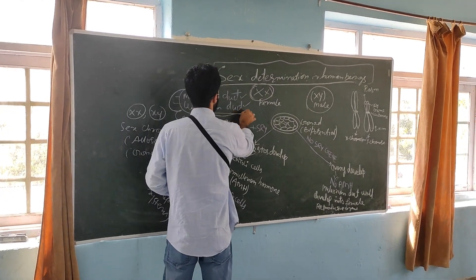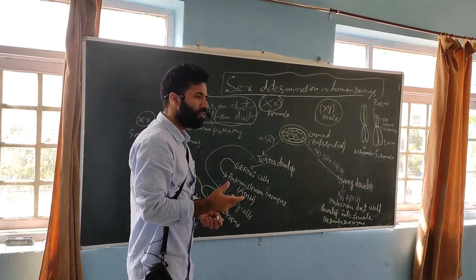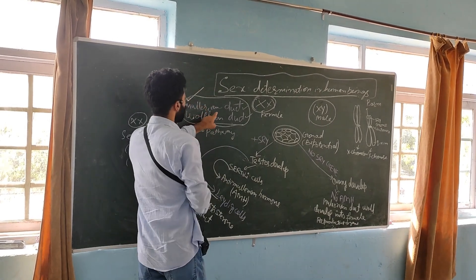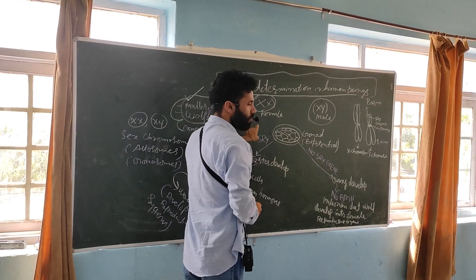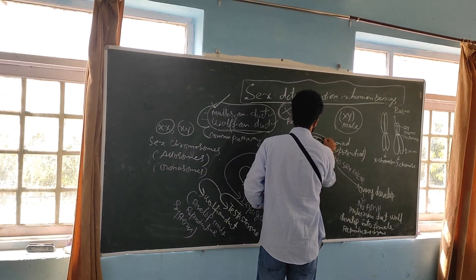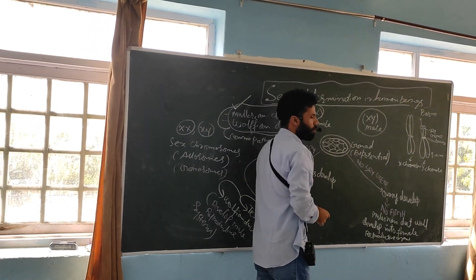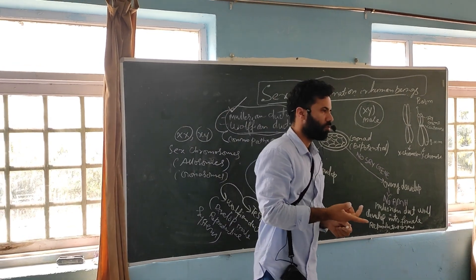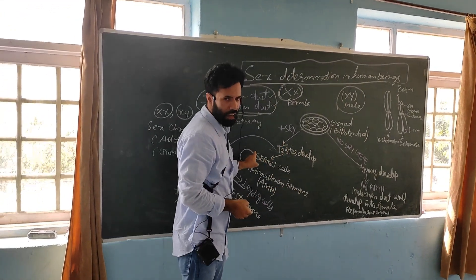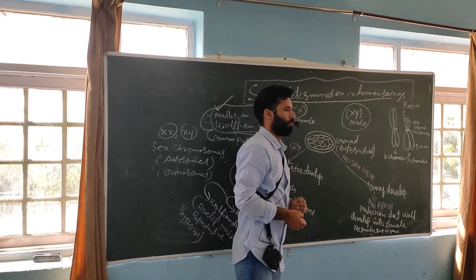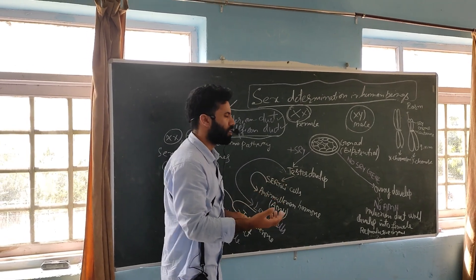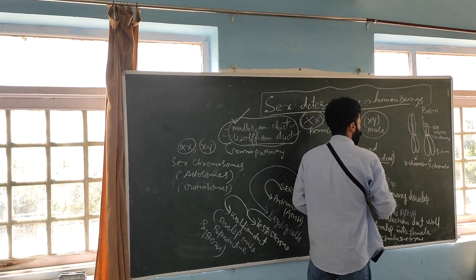The Mullerian duct and Wolfian duct are the common pathway for the embryo, because in future they will give rise to male and female reproductive structures. The development of these two ducts represents a common pathway. The gonad in the embryonic state is described as bipotential — meaning it can either develop into male or female. It has two capacities.